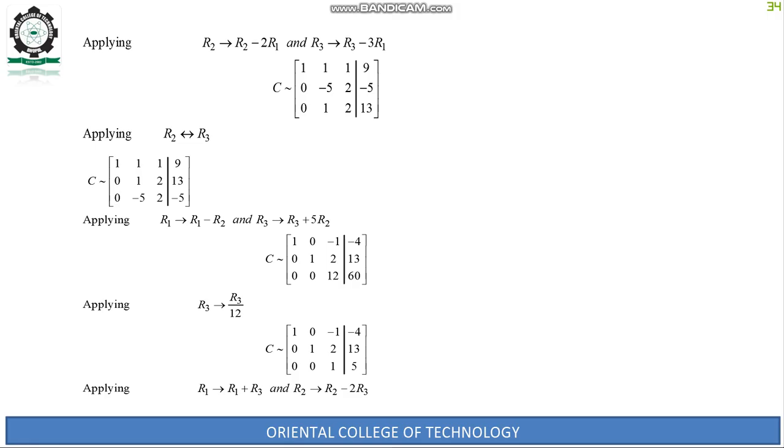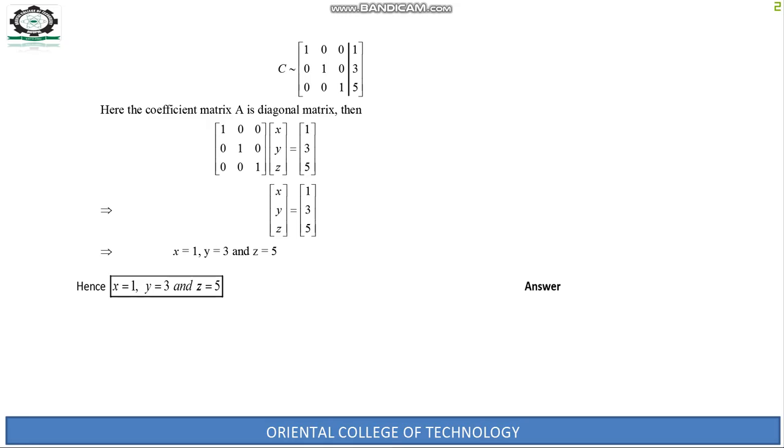Apply row operations R1 → R1 + R3 and R2 → R2 - 2R3. C becomes: 1, 0, 0, 1; 0, 1, 0, 3; 0, 0, 1, 5.